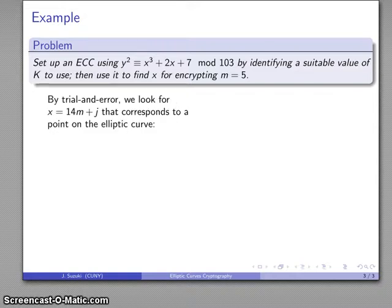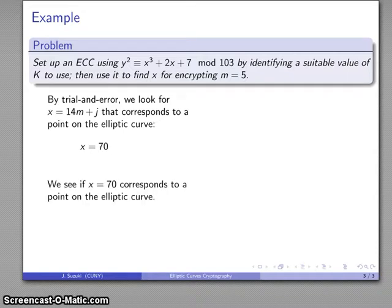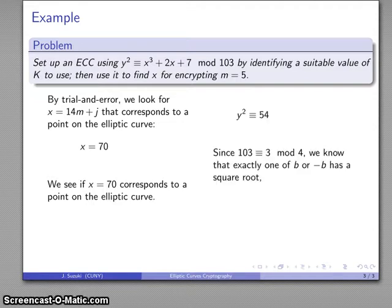By trial and error, I'll look for a point on the elliptic curve. My message is 5, so I'll check x = 70. Since 103 ≡ 3 mod 4, exactly one of a number or its negative has a square root. y² ≡ 54 ≡ -49, so 49 has a square root but 54 does not. We go on to the next point.